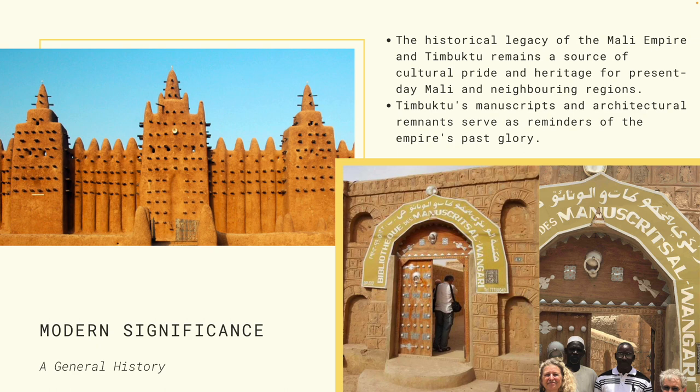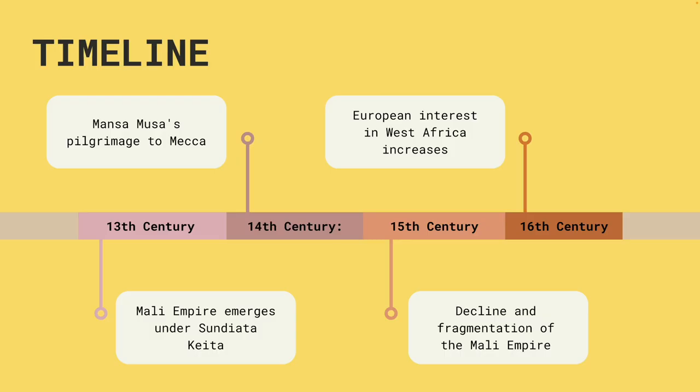Timeline: in the 13th century, the Mali Empire emerged under Sundiata Keita. By the 14th century, Mansa Musa made his famous pilgrimage to Mecca. In the 15th century, the empire experienced decline and fragmentation. By the 16th century, European interest in West Africa increased.